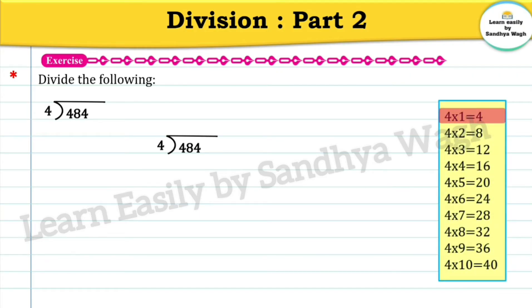4 ones are 4, so we write 4 and 1 as the quotient. Now we subtract 4 from 4, and the answer is zero. The next digit is 8. In the 4 times table: 4 ones are 4 and 4 twos are 8, so we will write 8 over here and 2 as the quotient.